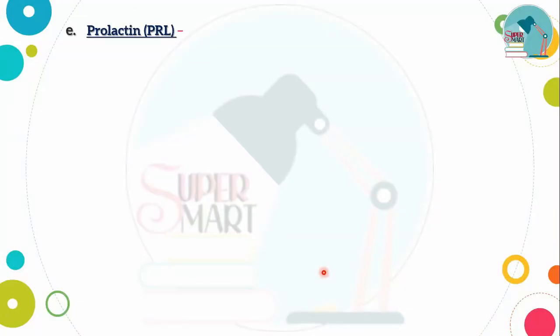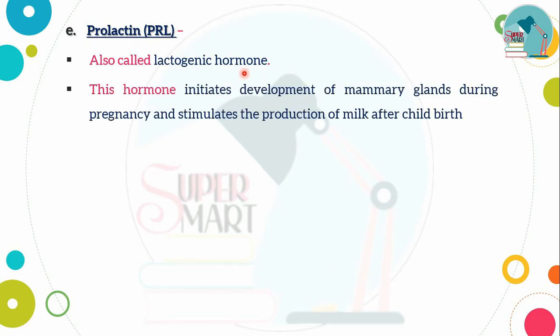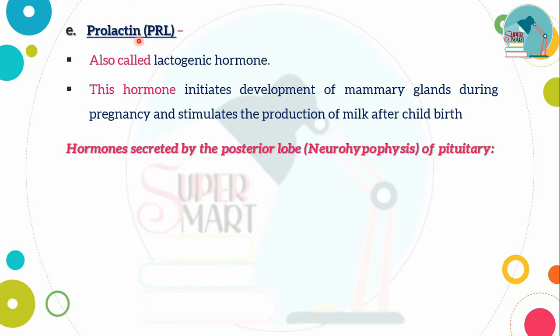Prolactin (PRL), also called lactogenic hormone, stimulates mammary gland development during pregnancy. After childbirth, it stimulates milk production. These are the hormones secreted by the anterior lobe of the pituitary gland.